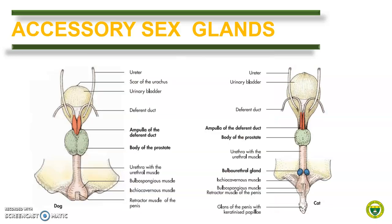Here we compare the accessory sex glands of male carnivores like dogs and cats. Both animals have ampullary and prostate glands. The prostate glands of both animals have a vestigial disseminated part, but the compact part is large and globular. It is so extensive in this species that it entirely surrounds the urethra, as shown here. In addition, cats have a very small and spherical bulbo-urethral gland, which is absent in dogs. Note that both dogs and cats lack the vesicular gland.